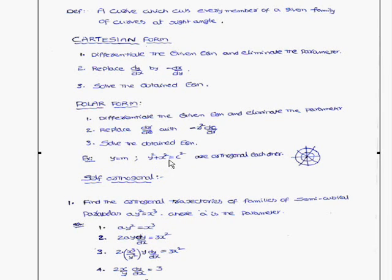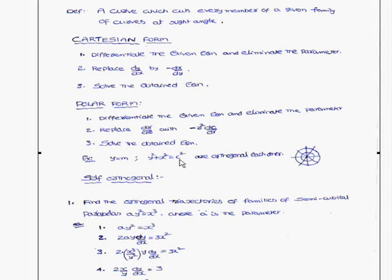Consider the example: y = mx and x² + y² = c² are orthogonal to each other. For y = mx, as m varies you get different numbers of lines. For x² + y² = c², that is nothing but circles — as c varies, you get different numbers of circles. Therefore, these two families are orthogonal to each other.